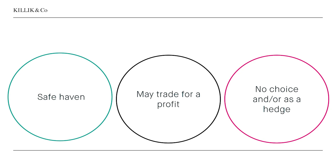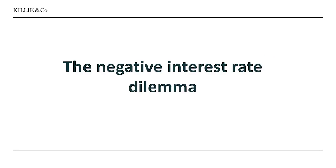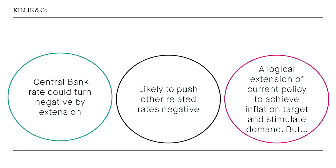That's got the Bank of England amongst others thinking that the natural extension would be a central bank rate of interest that's negative. Why is that causing so much debate? Fans of negative rates argue it's just an extension of the policy of cutting the central bank rate to stimulate demand and make life easier for borrowers. It would push other related rates negative too. Fans would also say this is a logical extension of a policy that seeks to create a bit more inflation — because inflation is below target at the moment — and also stimulate demand by moving people out of savings.